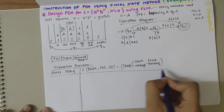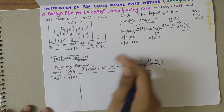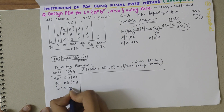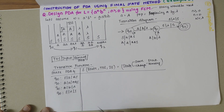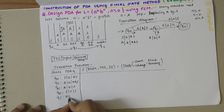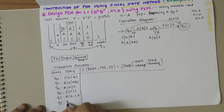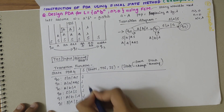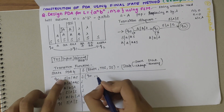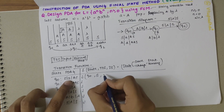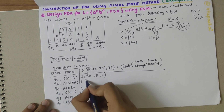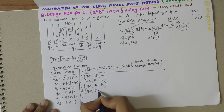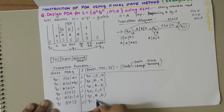Listing all transitions: in q0 with S on top and input 'a', we get 'a, S' on stack. In q0 with 'a' on top and input 'a', we get 'a, S'. In q0 with 'a' on top and input 'b', the remaining stack is lambda. In q0 with S on top and input lambda, remaining is S. In q1 with 'a' on top and input 'b', remaining is lambda. In q1 with S on top and input lambda, remaining is S.